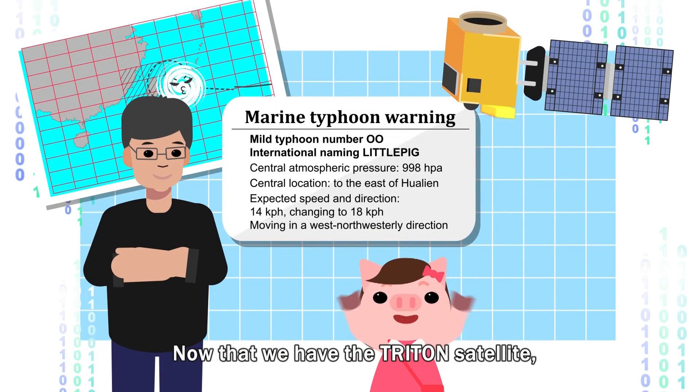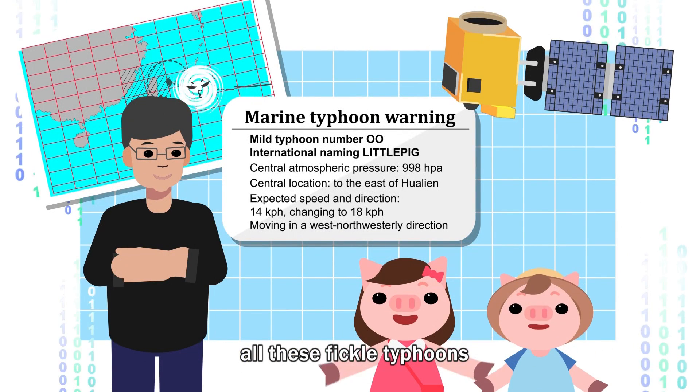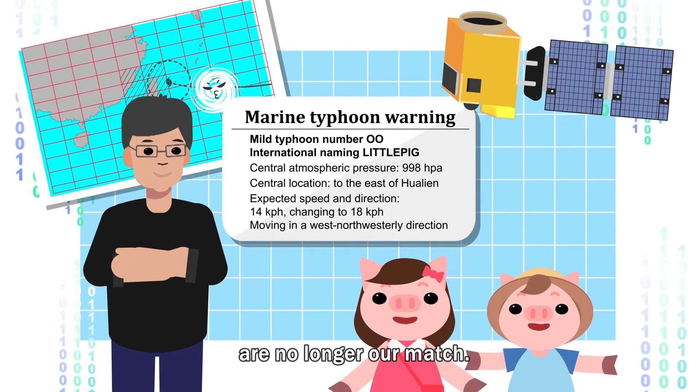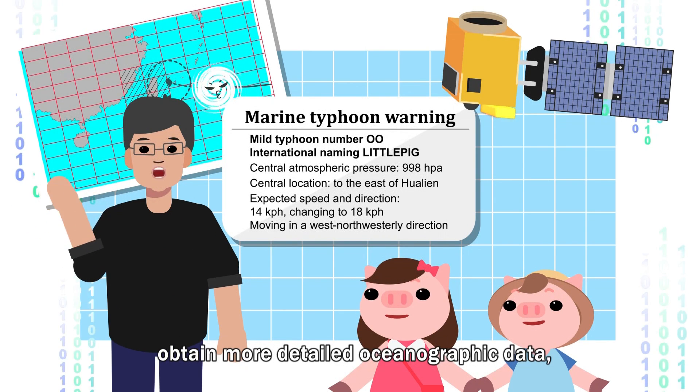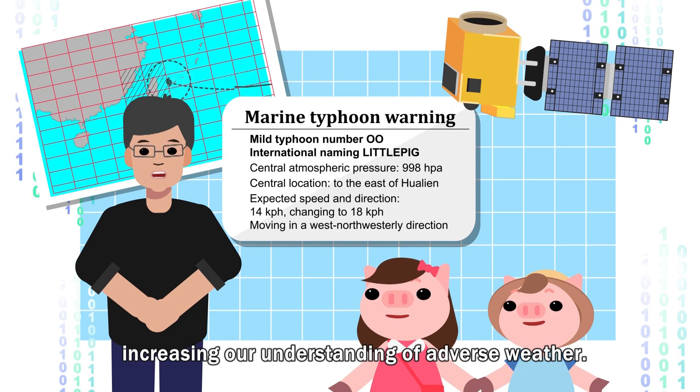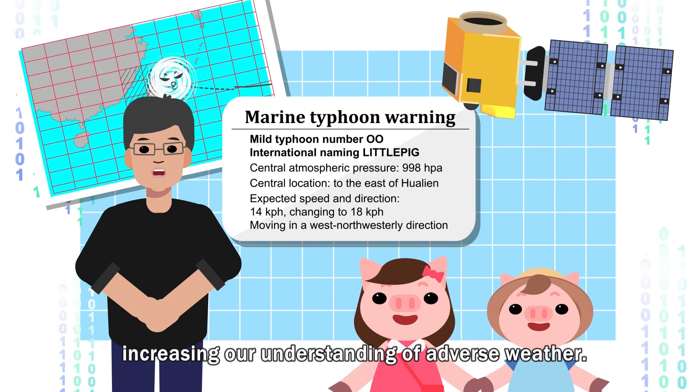Now that we have the Triton satellite, all these fickle typhoons are no longer our match! That's right! The Formosat 7R Triton can help us obtain more detailed oceanographic data, increasing our understanding of adverse weather. Yay!